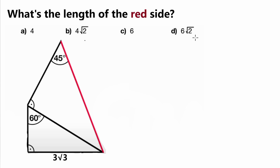Looking at the triangle that contains the red side that we are looking for, we can see that it is given an angle of 45 degrees and we are also given that this is a right angle — this symbol here means right angle. To figure out the side length we're going to use trigonometry, but in order to do that we still need to have one side length known, and we do not know a side length of this triangle yet.